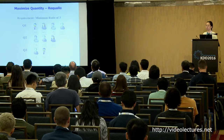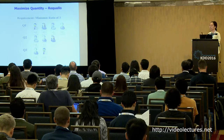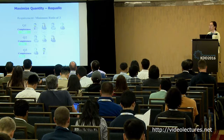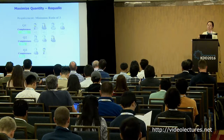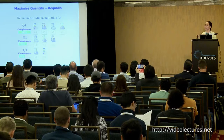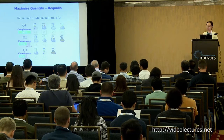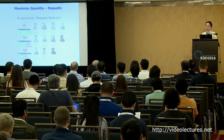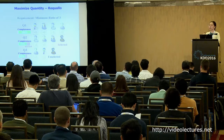Using the same example but with a minimum ratio requirement of three: question one already achieved the requirement, so its completeness is 100% and it is removed from consideration. Questions two and three should be considered since they haven't achieved the requirement yet. After calculating the rewards, question two has a bigger reward than question three, so question two will be selected to label next.